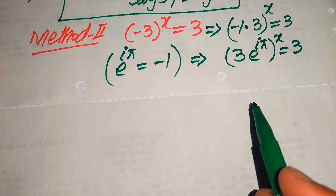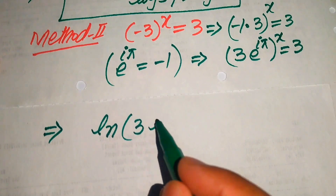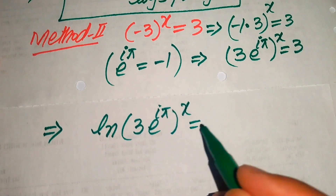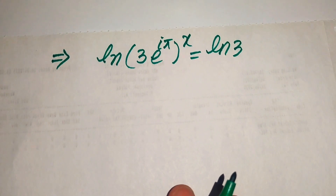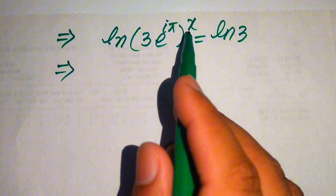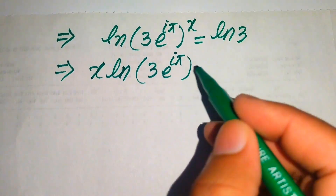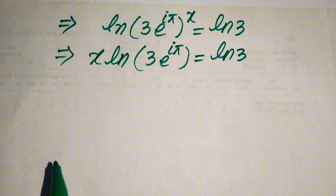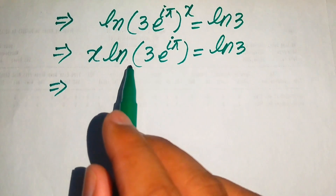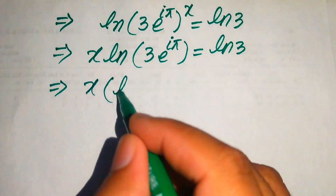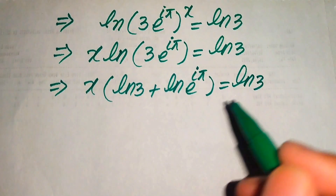Now we apply the natural log on both sides: ln of (3 · e^(iπ))^x equals ln 3. Applying the power property, we move x to the front: x times ln(3 · e^(iπ)) equals ln 3. Since we have a product inside the log, we apply the product property: x times (ln 3 + ln(e^(iπ))) equals ln 3.